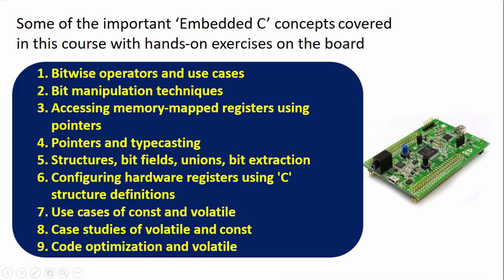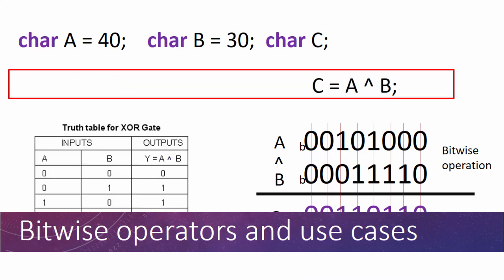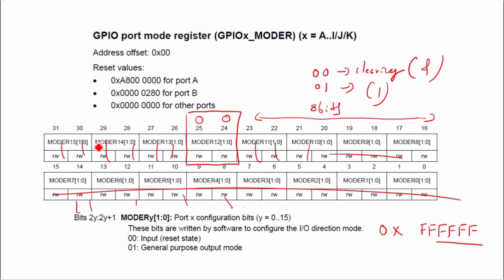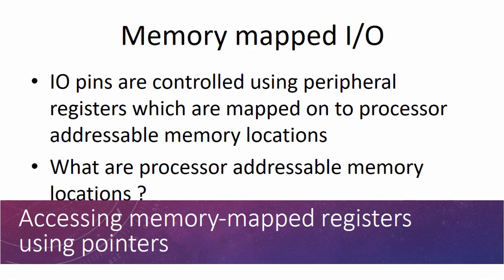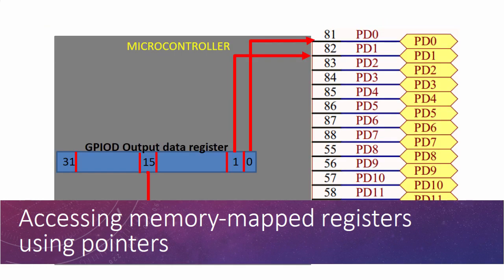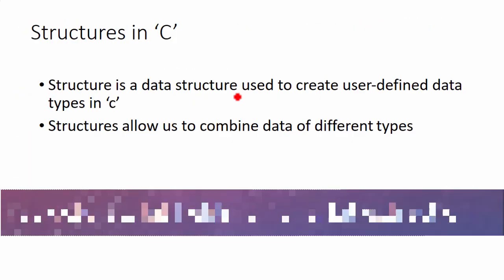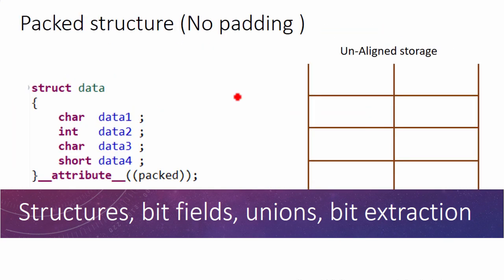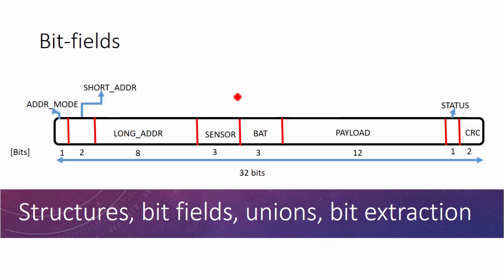Some of the critical microcontroller-related C concepts covered include bitwise operators, usage of bit manipulation techniques to program microcontroller peripheral registers, accessing memory-mapped registers using pointers, and pointers and casting structures, bit fields, and unions to program microcontroller registers and for bit extraction techniques.